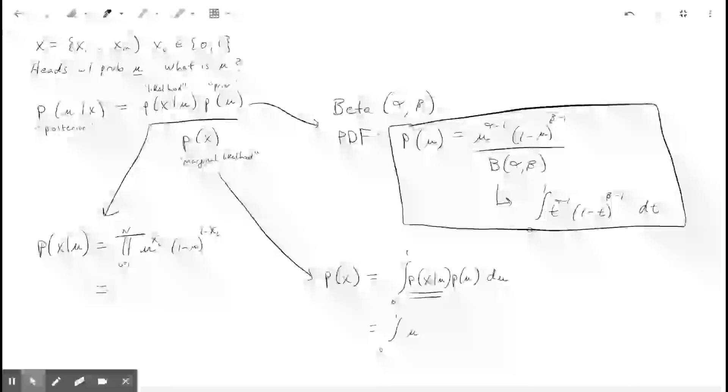But I want to write this as, and maybe you can take a minute to convince yourself that this is mu to the number of 1s that you observe in your data, times 1 minus mu to the number of 0s that you observe in your data. And this is the form of the likelihood that I want to use going forward.